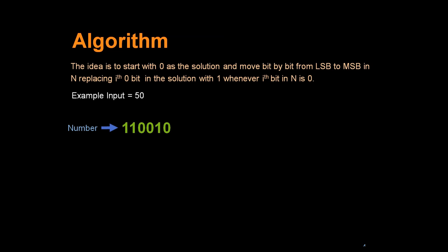Example input is 50. The number is 110010. LSB is 0, MSB is 1, and let's initialize the solution as all bits at 0.